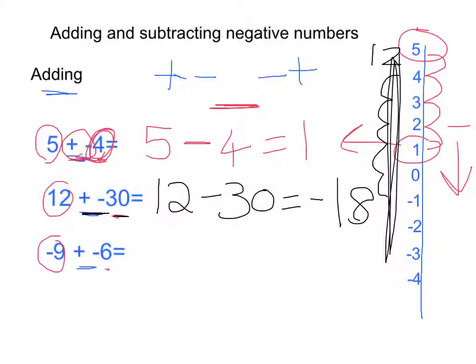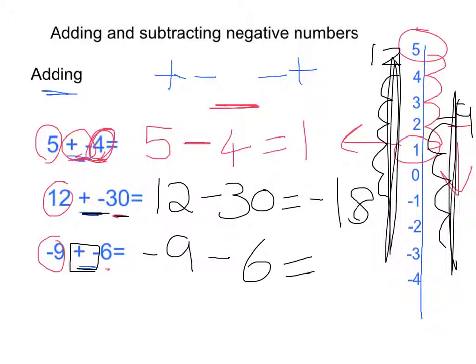And the last one. This time I'm starting at minus 9. My add and subtract next to each other become a minus, and I keep my 6. So this is like saying, I've already overspent by 9 pounds, I then spend another 6. How much do I owe altogether? So if I was on a number line, I'd be starting at minus 9, and then doing 6 jumps down. And that would give me minus 15.